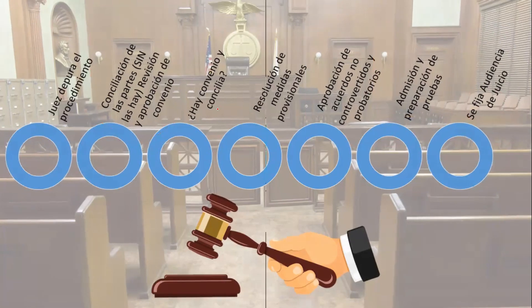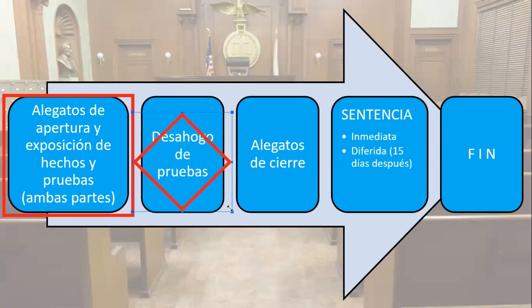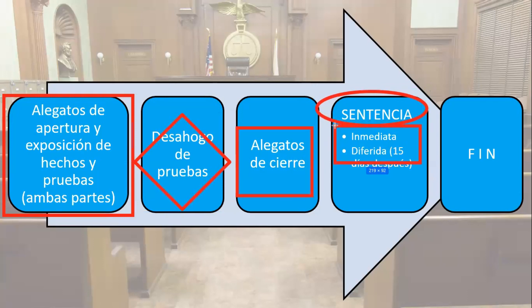Llegamos a la audiencia de juicio oral en materia familiar. Iniciamos con los alegatos de apertura de la parte actora y después de la parte demandada. Se desahogan las pruebas admitidas en la audiencia preliminar, se formulan alegatos y se dicta sentencia — en esta misma audiencia o diferida hasta 15 días después — poniendo fin a la controversia en materia familiar.